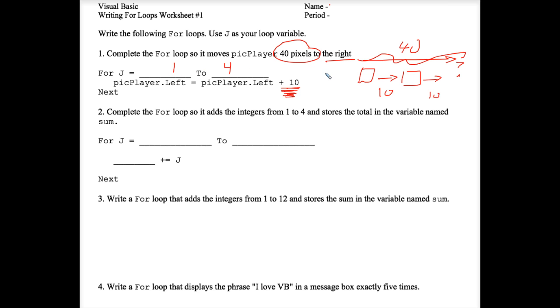Let's move on to talk about the second exercise. Here, we're supposed to complete a for loop that adds up integers from one to four, and to store that total in a variable named sum. This has nothing to do with animating a picture box across the screen. So if you wanted to add up the numbers one plus two plus three plus four, of course you could use a calculator. You could probably do that in your head. But we want the power of the computer to do it.